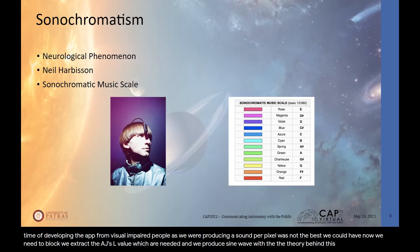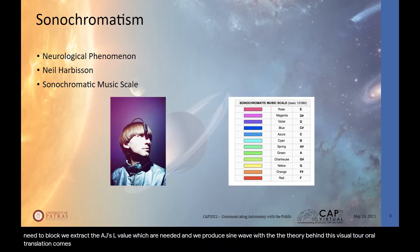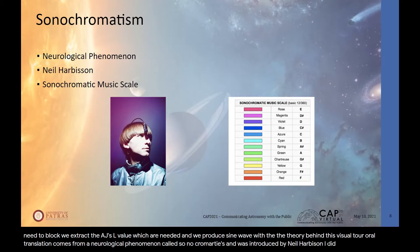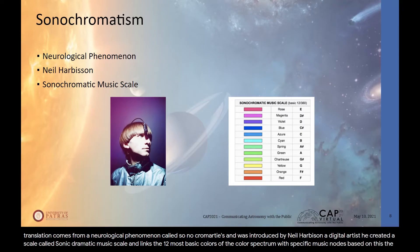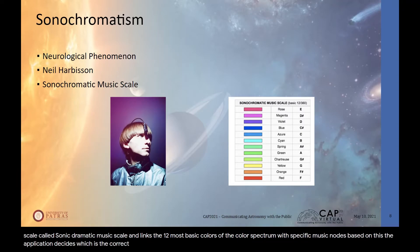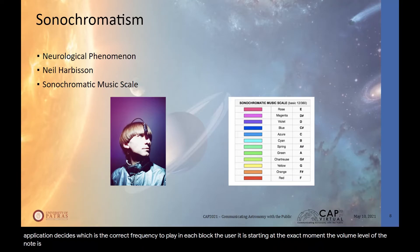The theory behind this visual-to-audio translation comes from a neurological phenomenon called sonochromatism, introduced by Neil Harbison, a digital artist. He created a scale called the sonochromatic music scale, which links the 12 most basic colors of the color spectrum with specific musical notes. Based on this, the application determines the correct frequency to play for each block the user is touching. The volume level is decided by a simple logarithmic scale based on the lightness of the block.